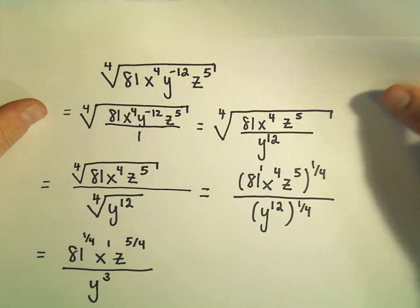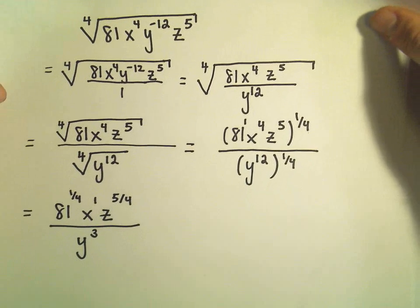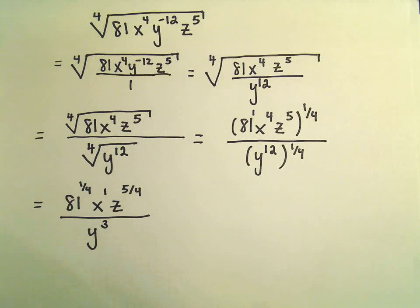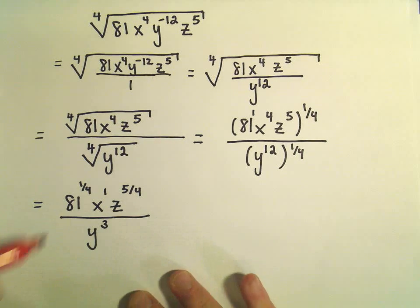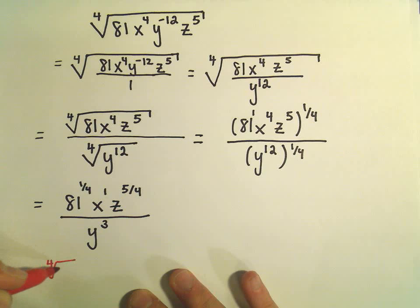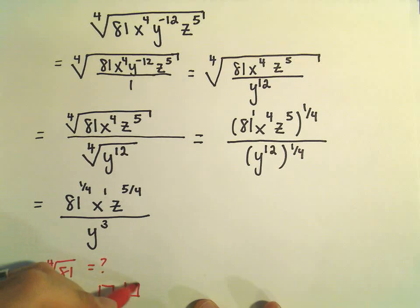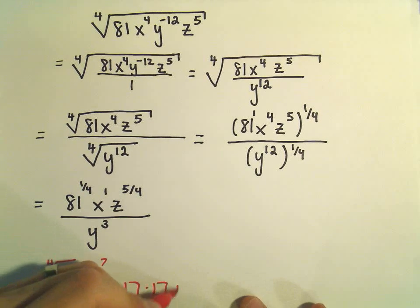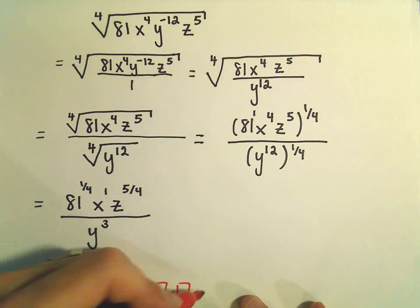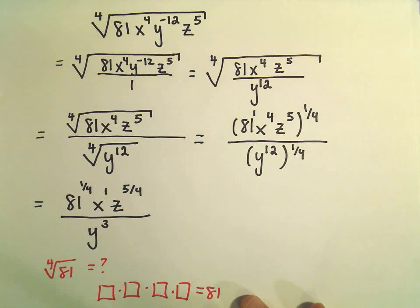So a couple little things left that we can do here. I'm going to break this up just a little bit. So recall 81 to the one-fourth, that's just the fourth root of 81. And to me, that says we want some number that if we multiply it by itself four times, which is the root, we want that to equal 81.